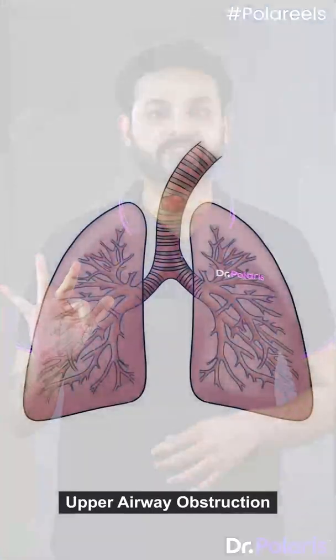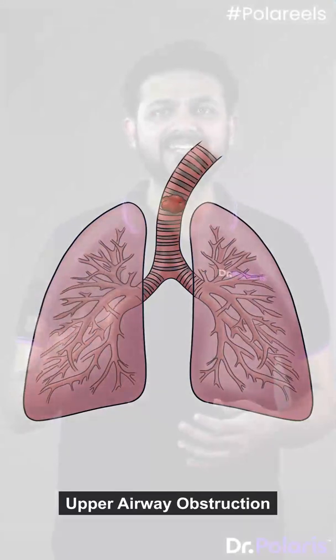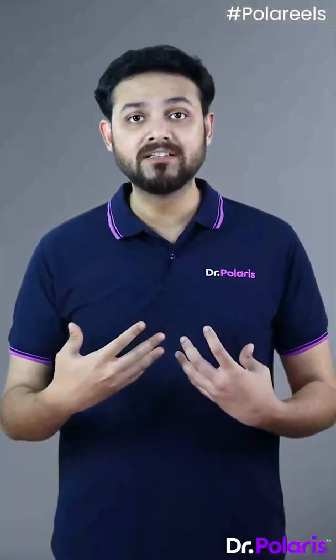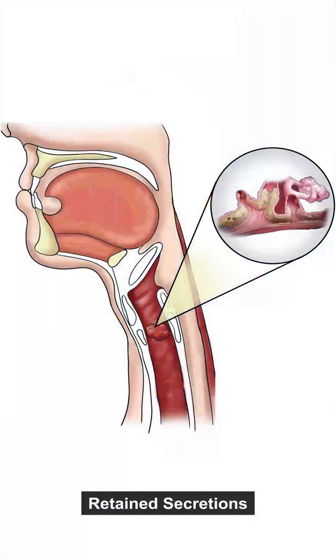The first indication of tracheostomy is upper airway obstruction. Suppose a patient has a foreign body, a tumor, or any congenital anomaly such that they cannot breathe from above — then we do a tracheostomy. The second indication is retained secretions.